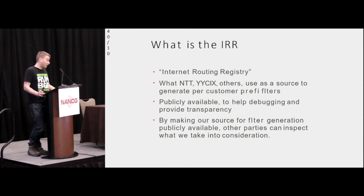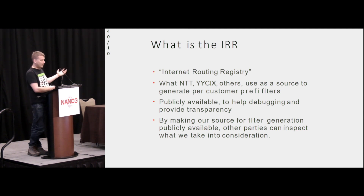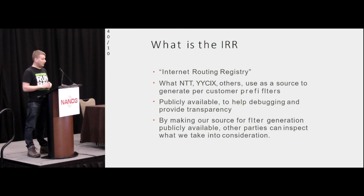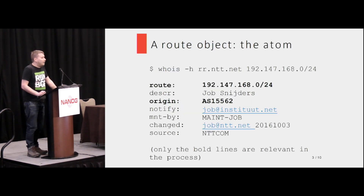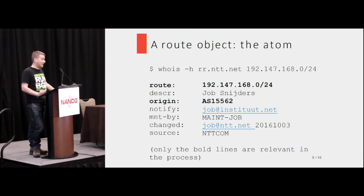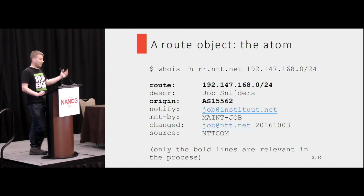Traditionally, we use what is called an IRR — an Internet Routing Registry — and it's basically a database where you can publish statements about which IP block should be originated by which ASN. This is a common source of data, publicly accessible. The nice thing about it being public is that other people can verify how it works, what data is there, and consume the data in their own prefix filters. If we zoom in on the actual contents of IRR, we have the route object, which is essentially the atom of this concept. The two key elements of the route object that matter are the prefix itself and the ASN that is allowed to originate the prefix. All other attributes are discarded and not considered by prefix filter generators.